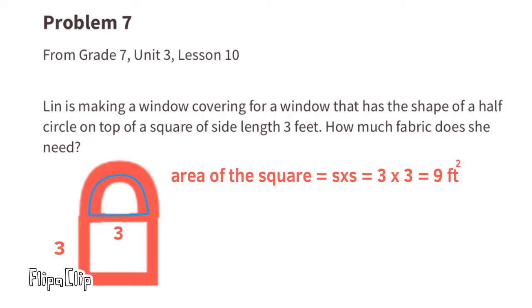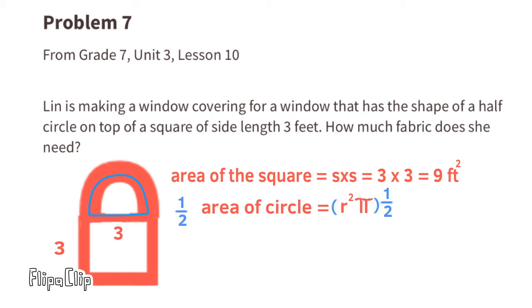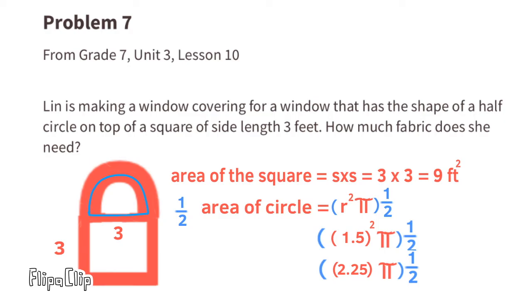Next, we find the fabric needed for the half-circle window on top. The area of a circle is pi times radius squared; since this is a half circle, we cut that in half. The diameter is three feet, so the radius is 1.5 feet. Radius squared is 1.5 times 1.5, which equals 2.25. Multiplying 2.25 by pi, using 3.14, gives 2.25 times 3.14 equals 7.065.